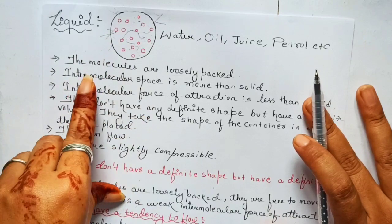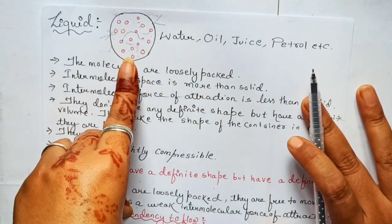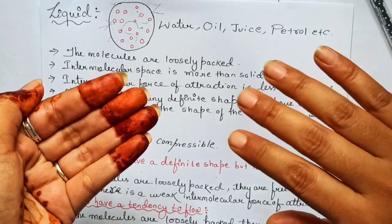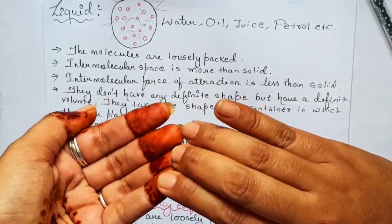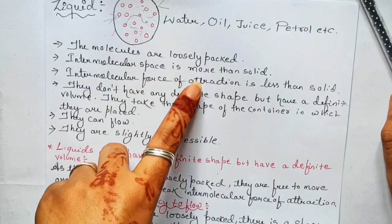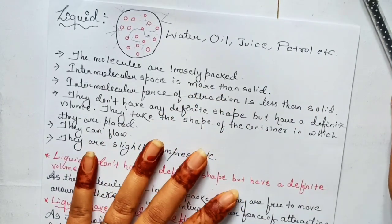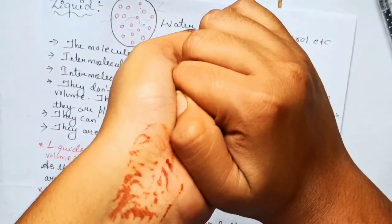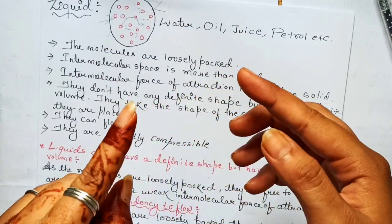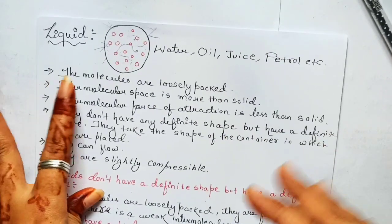We can easily see some intermolecular space in liquids. So intermolecular space is more in liquid as compared to solid. Third, if the molecules are not close to each other, there will be very less force of attraction. Intermolecular force of attraction is less in liquid compared to solid. In solid, molecules were close to each other so the force of attraction was very high, but in liquid they are a little further apart, so that force is weak.